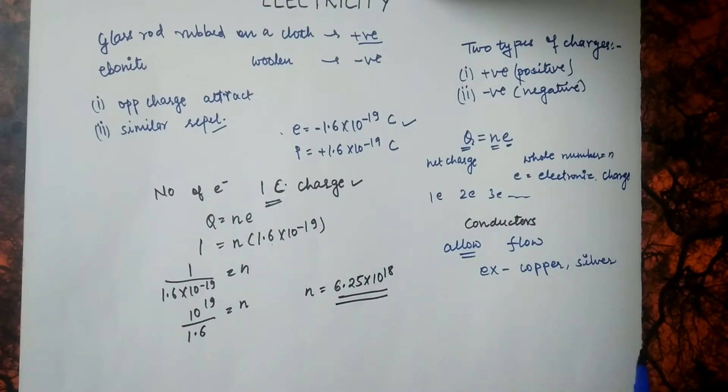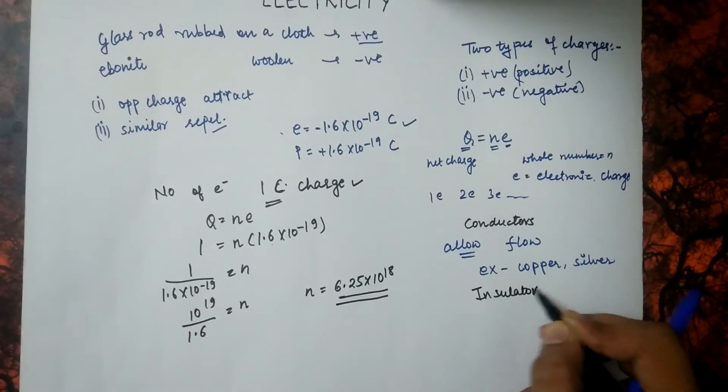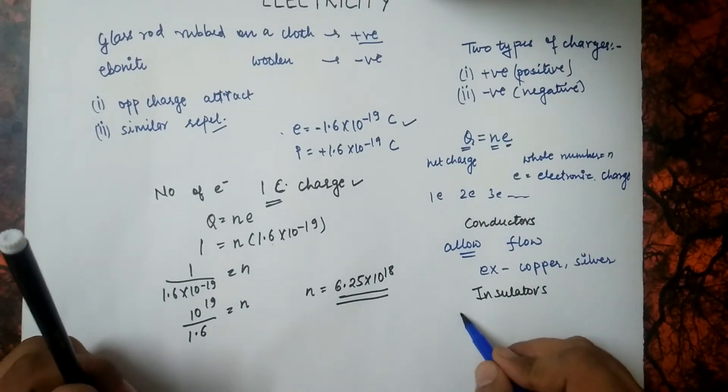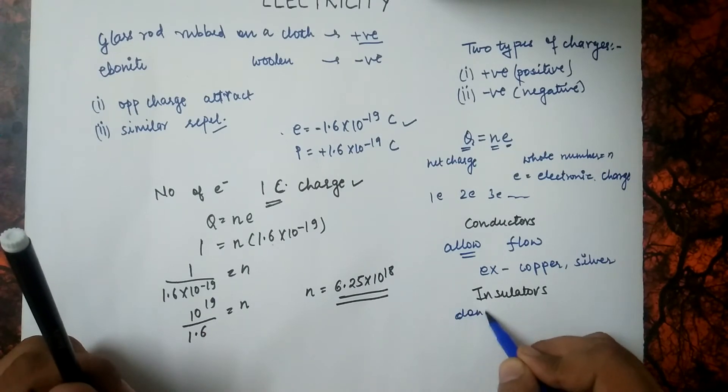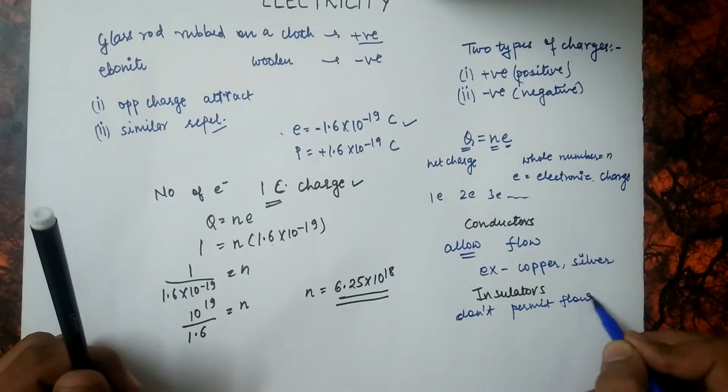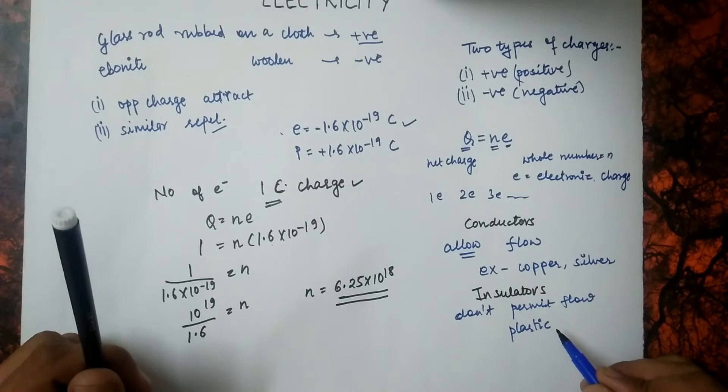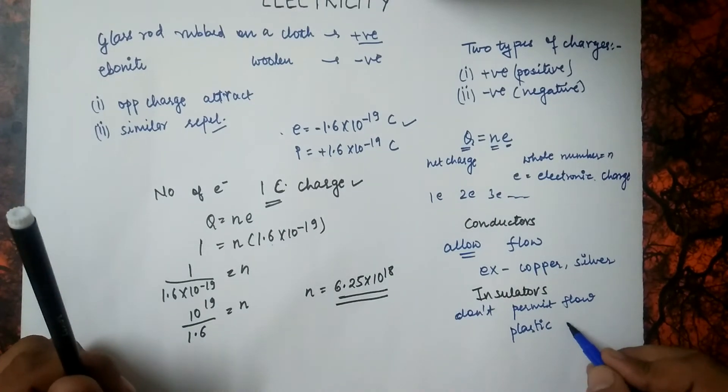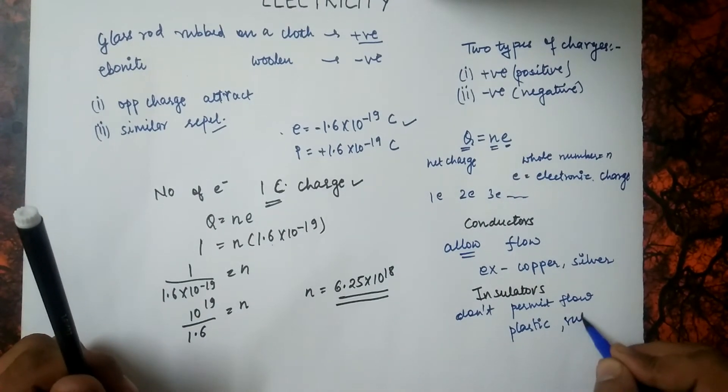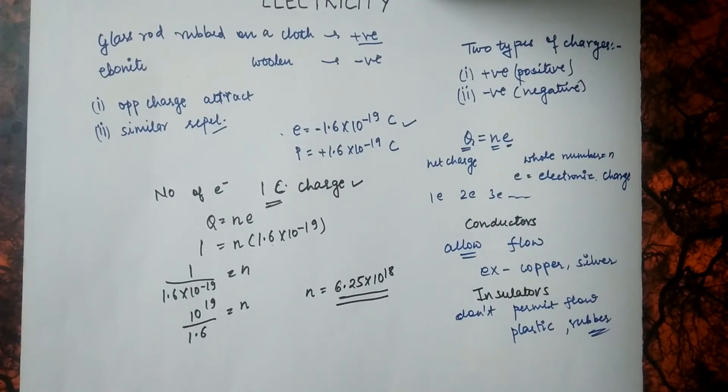Now, on the contrary, we have insulators. Insulators don't allow, they don't permit the flow. Examples include plastic, rubber, etc. That's why we have plastic covering on wires, so that wires might be shock proof.